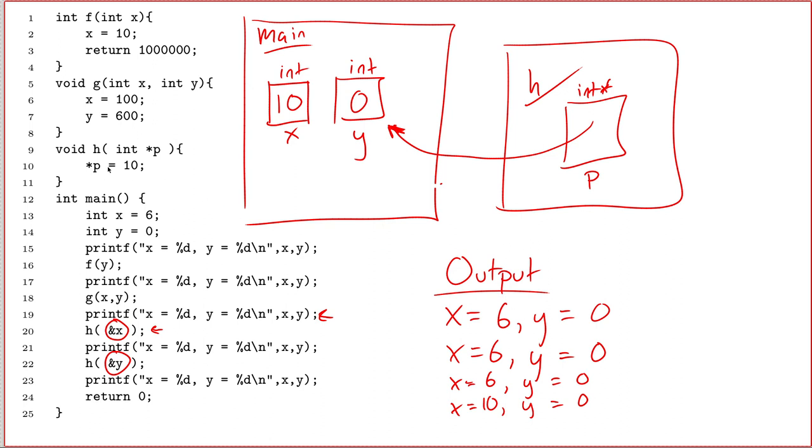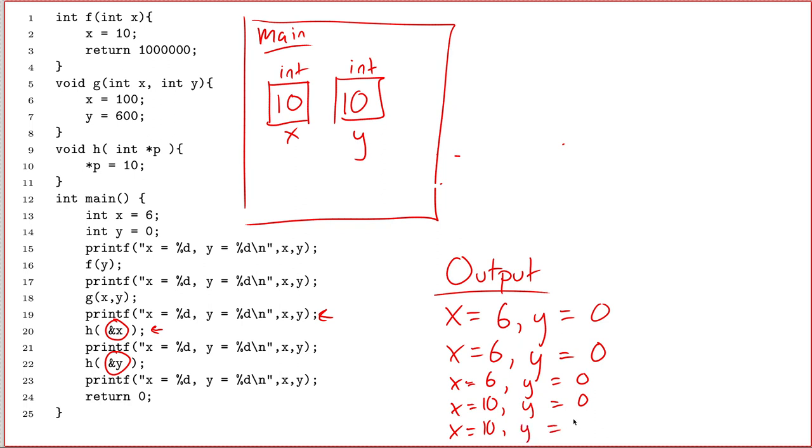So I'm now ready to start h. I've got this arrow pointing at y. On line number 10, it says star p equals 10. Take the value 10 and assign it to wherever you end up, if you start at p, and follow an arrow. And that, of course, takes me here. And so the variable y inside of the scope of main now ends up with the value 10. And then, just like before, h ends. So we, just like before, touch this up a bit. Get rid of the arrow. And then we're back at the end of line 22, and we're ready to execute line 23, which says x equals, well, x equals 10, and y equals 10.